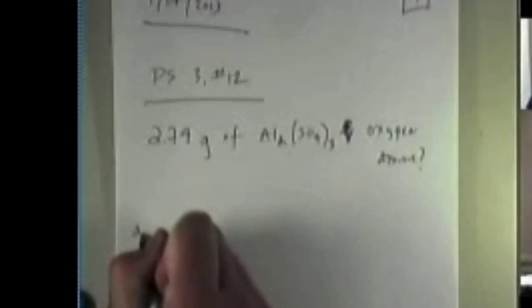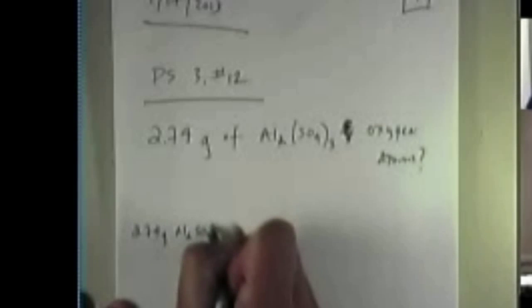what's the first thing that I always tell you guys to do? You almost always start with whatever value you're given that doesn't have denominator units. So I'm going to write down 2.74 grams of aluminum sulfate, and it is crucial when you're doing one of these that you write the units,